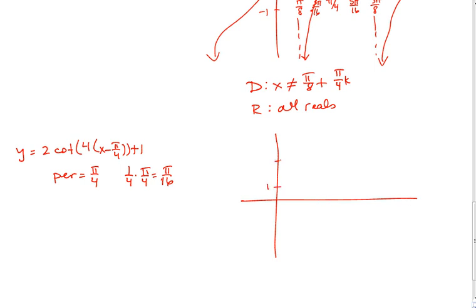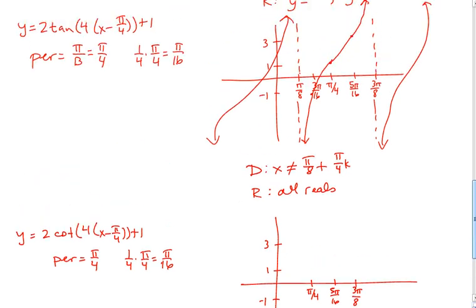Again it's going to be 1 and 3 into negative 1 and pi over 4. But see, here's the difference. We still have 5 pi over 16 and we still have 3 pi over 8, but remember how pi over 4 here represented our center point?